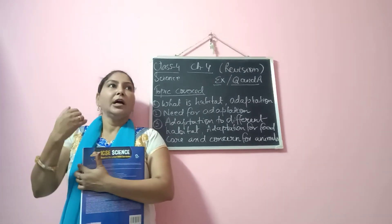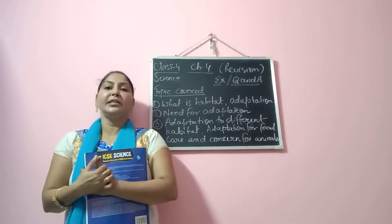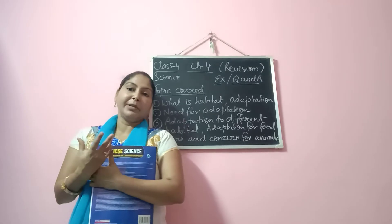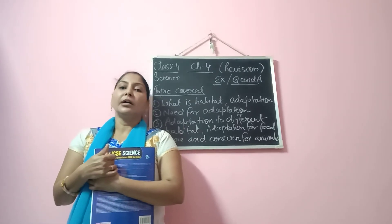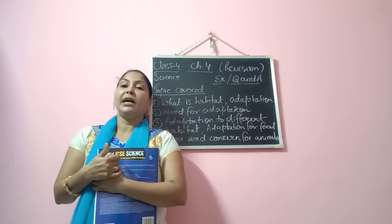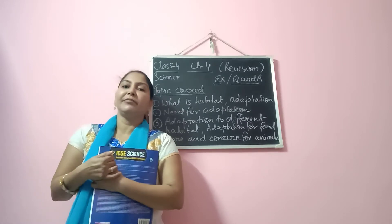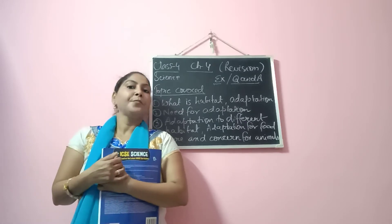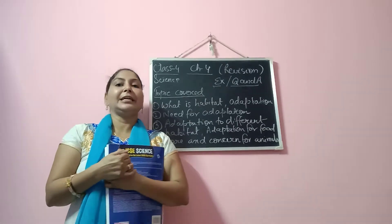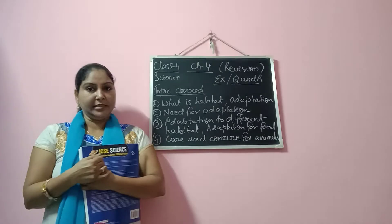According to the food habit of animals, there are three categories of adaptation for food: that is herbivores, omnivores, and carnivores. We have learned about that and discussed it. Finally, last but not the least, we have also discussed why animals are important for us.